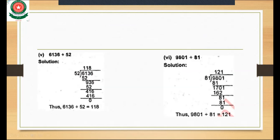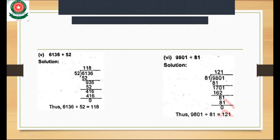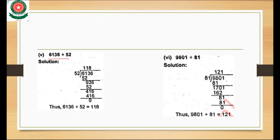Now part 6: 6136 divided by 52. We place 6136 inside and 52 outside the division form. Since 52 has two digits, we take two digits at a time. 52 times 2 gives a value greater than 61, so we multiply 52 times 1 which is 52. Subtracting 61 minus 52 gives 9.